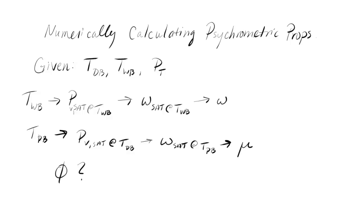Hello and welcome. If you've been following along with this series, we're numerically calculating psychrometric properties. The first case we were looking at is if we were given a dry bulb temperature, a wet bulb temperature, and the total atmospheric pressure.